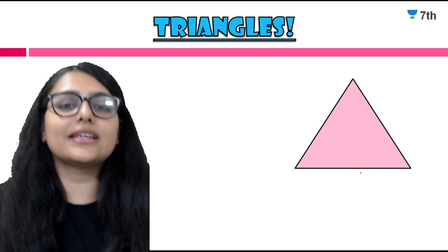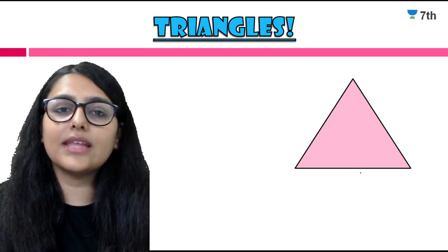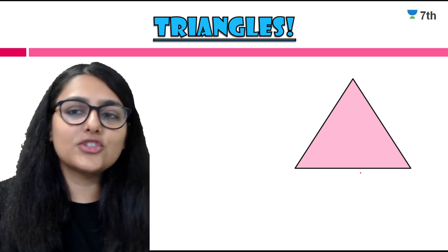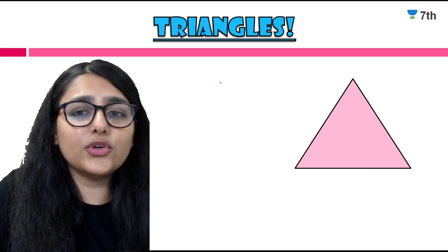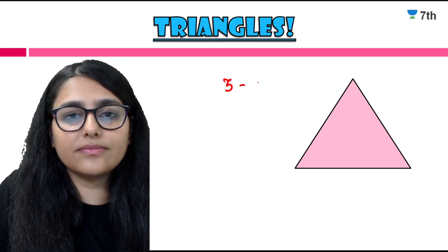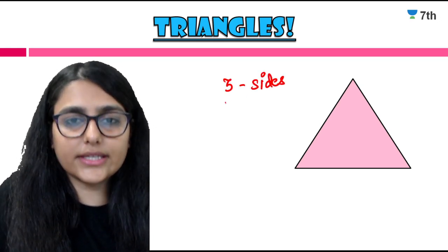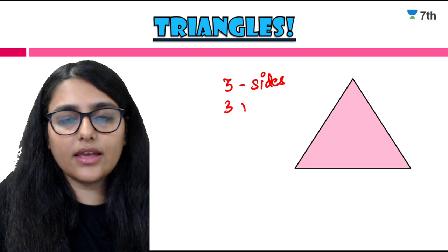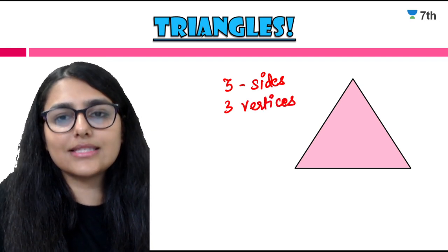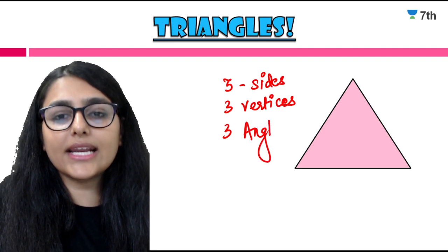Now let's start with triangles — we will start with the very basic: what is a triangle? It is a figure that has 3 sides, 3 vertices, and 3 angles. These are the main 3 properties of a triangle.